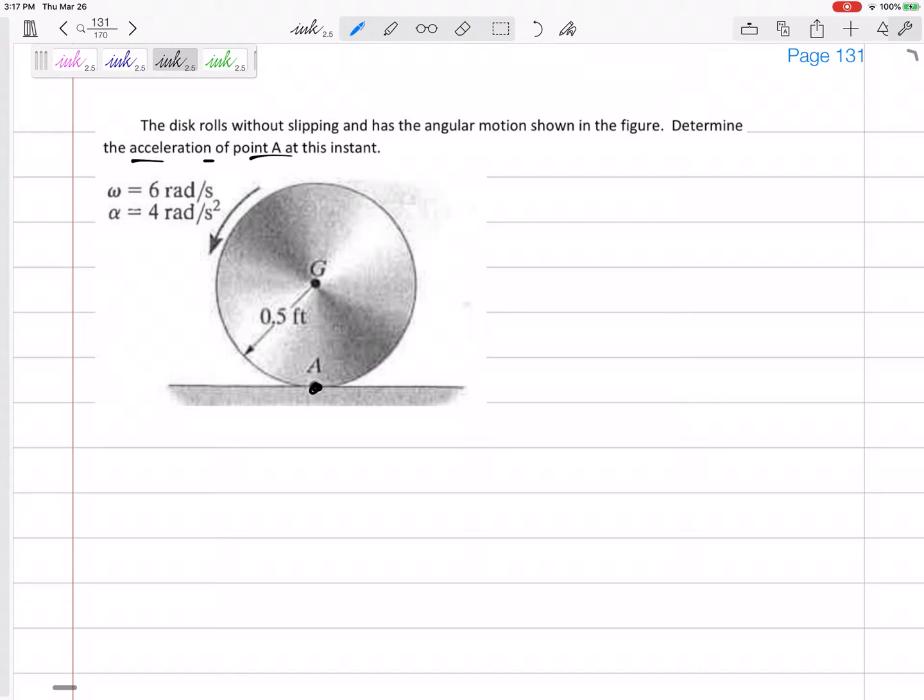It's not zero. I'll tell you that. You might think it's zero. The velocity at A is zero, but the acceleration is not zero.